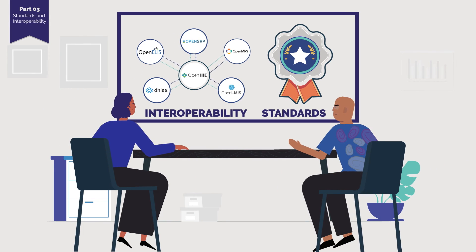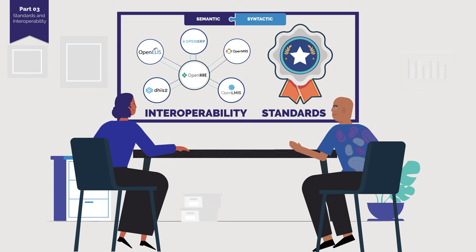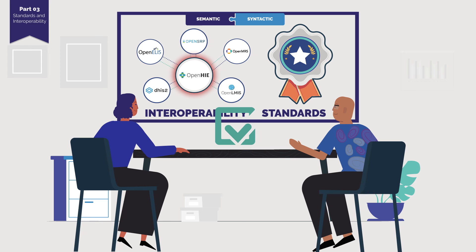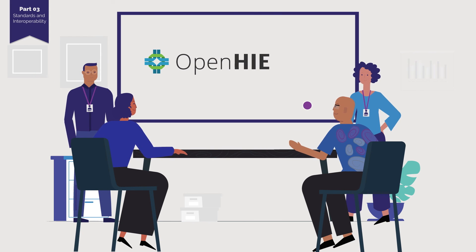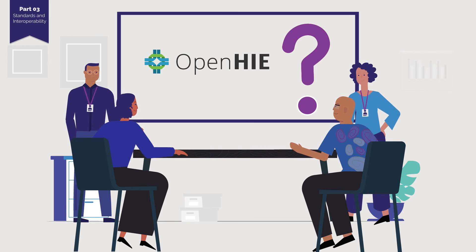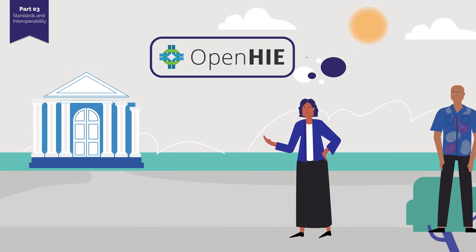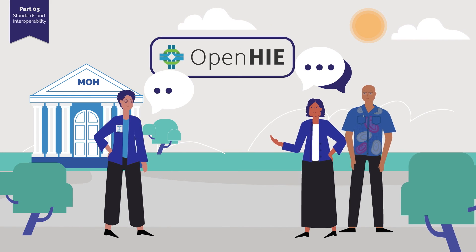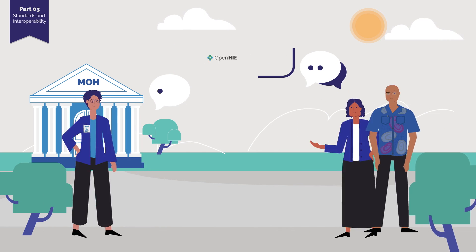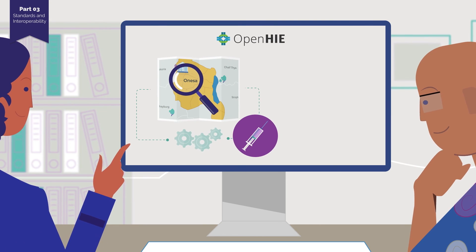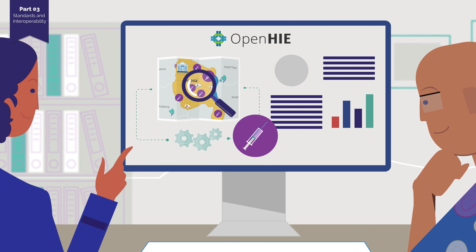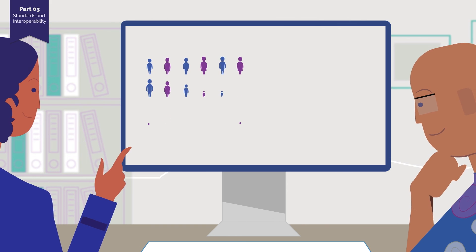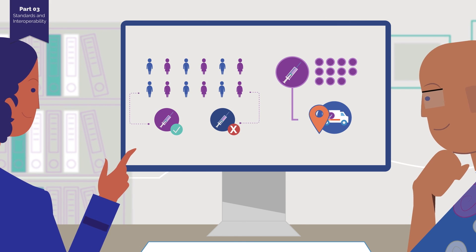Now that Isaac and Lucy understand how standards let applications communicate — both vocabulary and grammar — and that an HIE lets many applications easily exchange data in a cost-effective way, they want to invest in building one and are ready to learn more about how the components of an HIE architecture can interact with their applications. Once they know this, they can work with the MOH's Digital Health Lead to ensure that the investment roadmap for their national HIE will meet their needs. The next year when Isaac and Lucy need to do their planning, they can pull the data they need from the different systems together — seeing how many children need to be vaccinated, how many vaccines they have available, and how many they need to order.